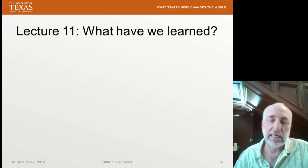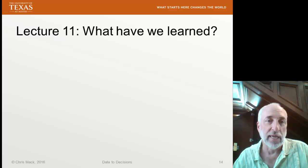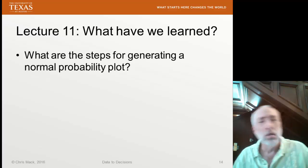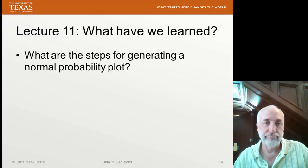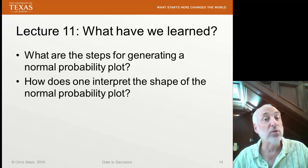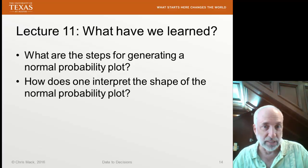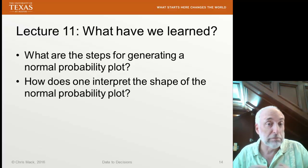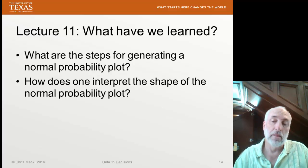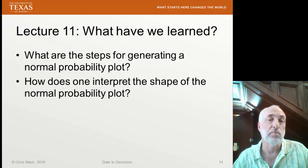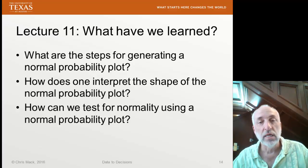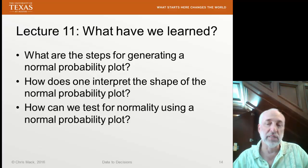So let's look at what we've learned in Lecture 11. You should be able to quickly and easily answer each of these questions. If not, please go back and review the material. What are the steps for generating a normal probability plot? How does one interpret the shape of a normal probability plot? If you see a particular shape, what does it tell you about the true distribution compared to your assumed normal distribution? Finally,